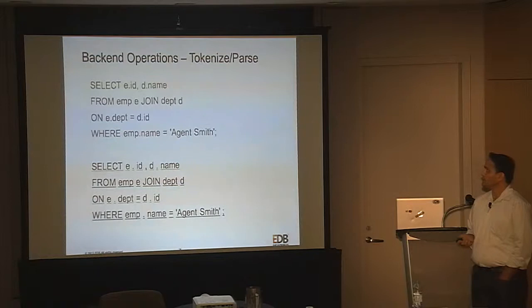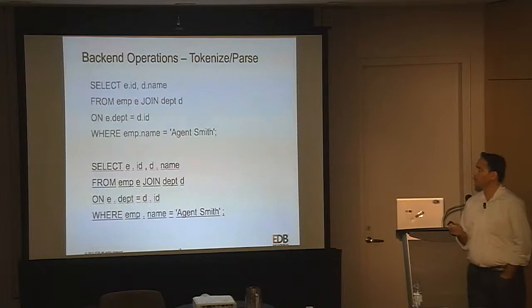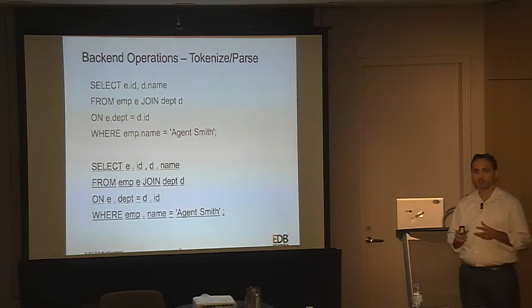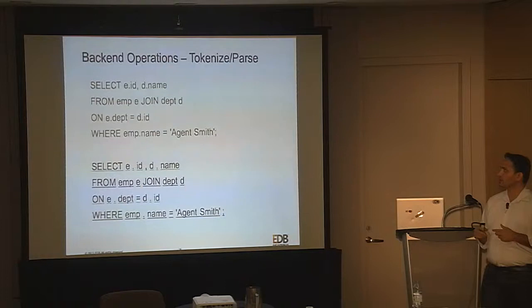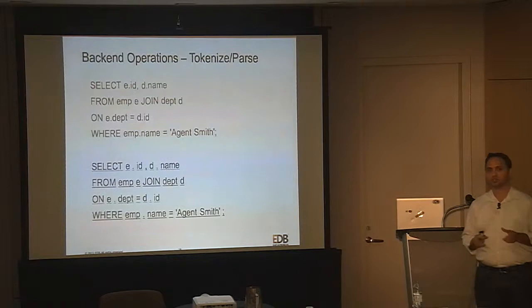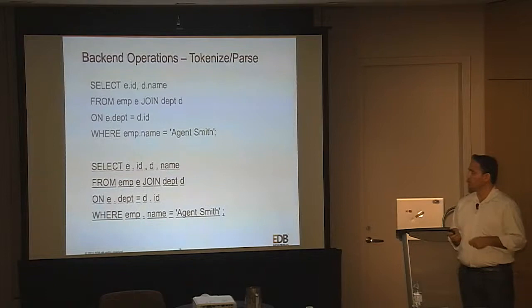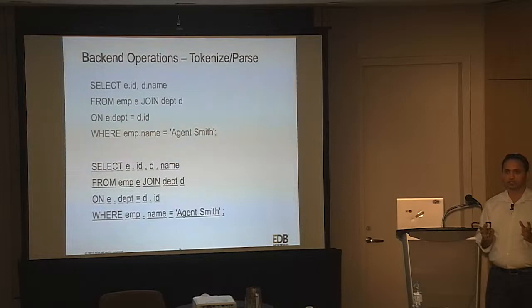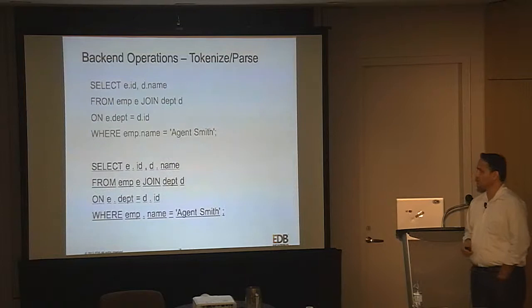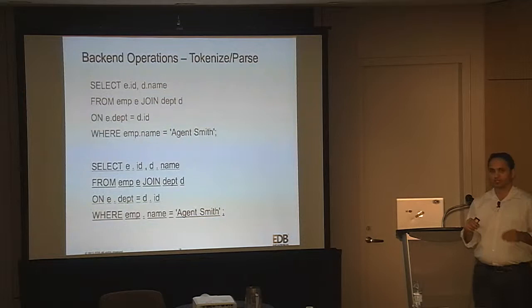The first step is tokenization and parsing. Say the application wants to join two tables — employee and department — on a specific condition: give all employees named 'Agent Smith' with their department names. The tokenizer breaks this query down from a single text blob into individual tokens, which are basically whitespace-separated strings. So SELECT is one token, E is one token, etc. One distinction: a whitespace inside a string literal like 'Agent Smith' is not a token separator — anything within single quotes is treated as one token.